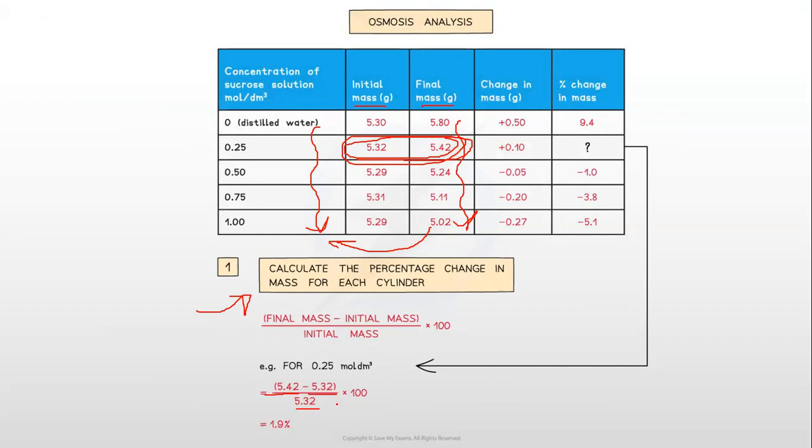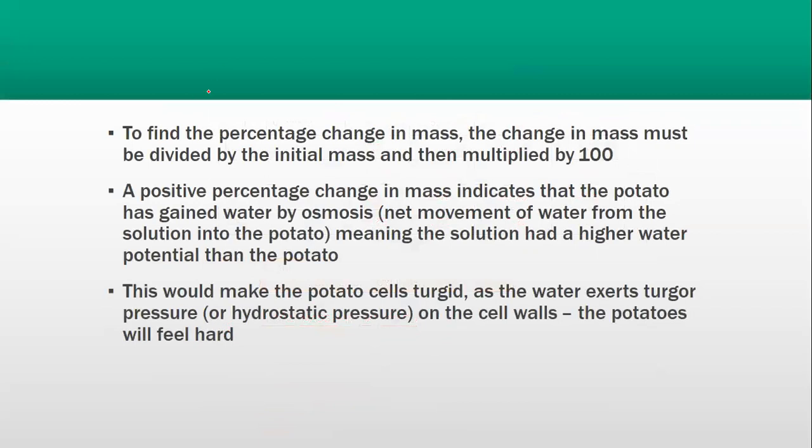To find the percentage change in mass, change in mass must be divided by the initial mass and multiplied by 100. A positive percentage change in mass indicates that the potato has gained water by osmosis, with net movement of water from the solution into the potato, meaning the solution had a higher water potential than the potato.